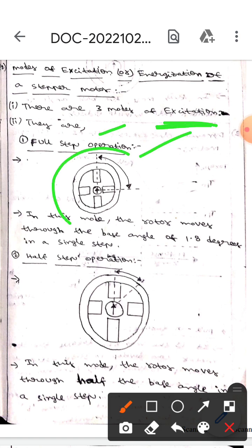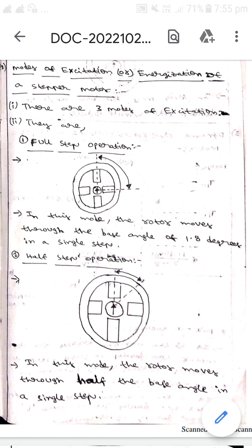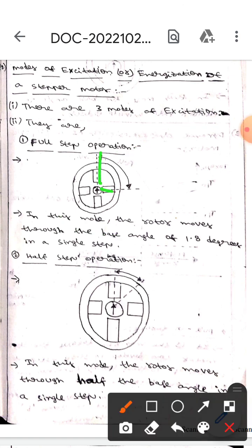The first one is full step operation. This diagram represents the full step operation. If you observe here it will rotate. In this mode, the rotor moves to the base angle of 1.8 degrees.